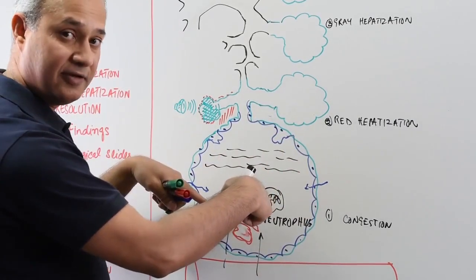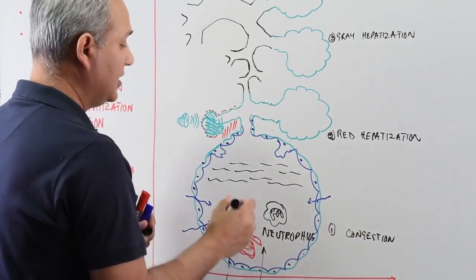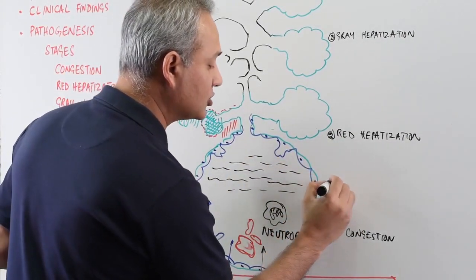And so now the alveoli are actually filled. Now remember we are talking inside the alveoli, not outside. So alveoli are now filled and this is called consolidation.